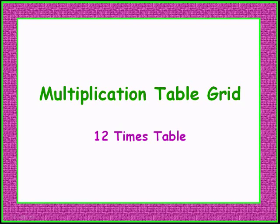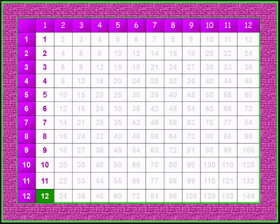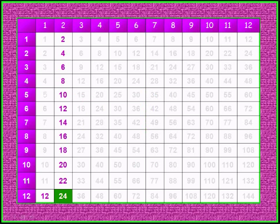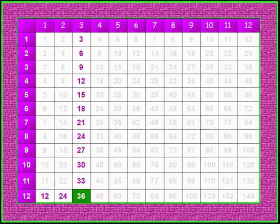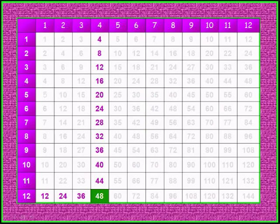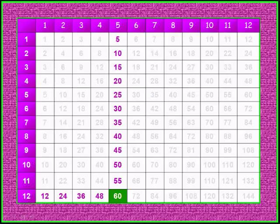Times table. 12 times 1 gives 12. 12 times 2 gives 24. 12 times 3 gives 36. 12 times 4 gives 48. 12 times 5 gives 60.